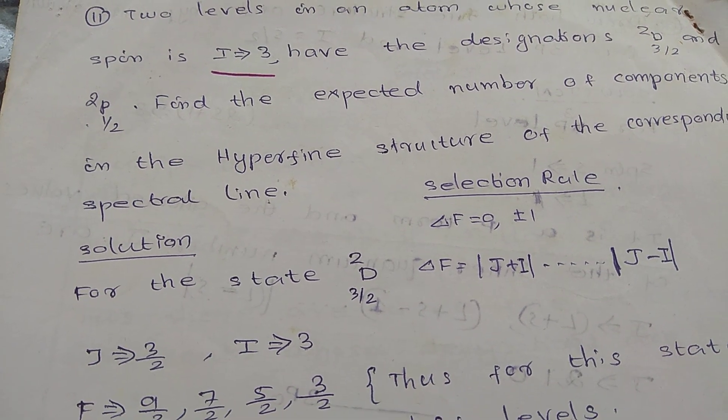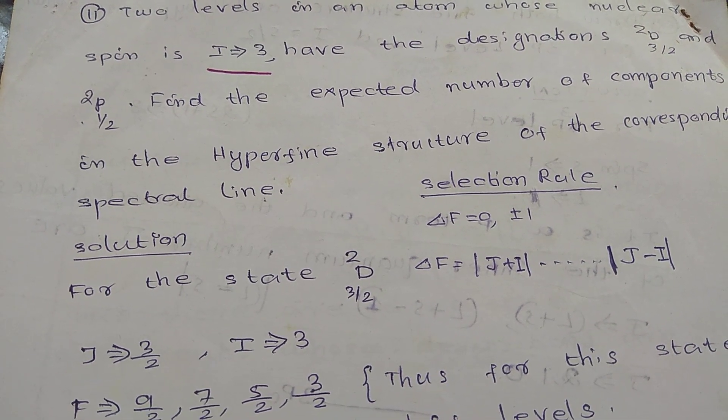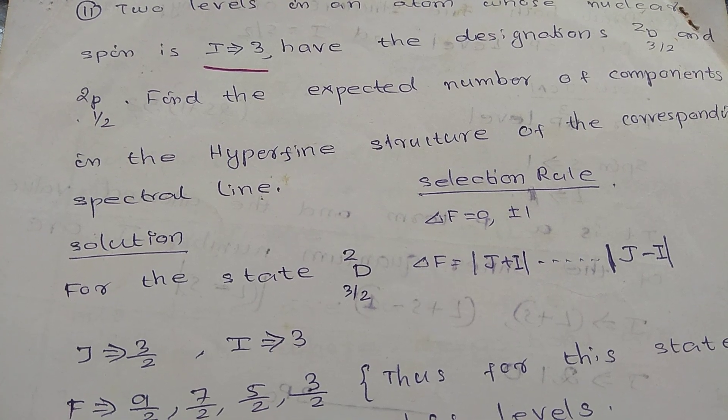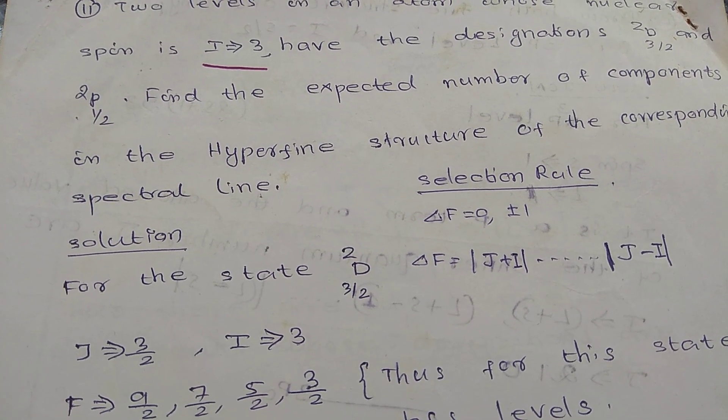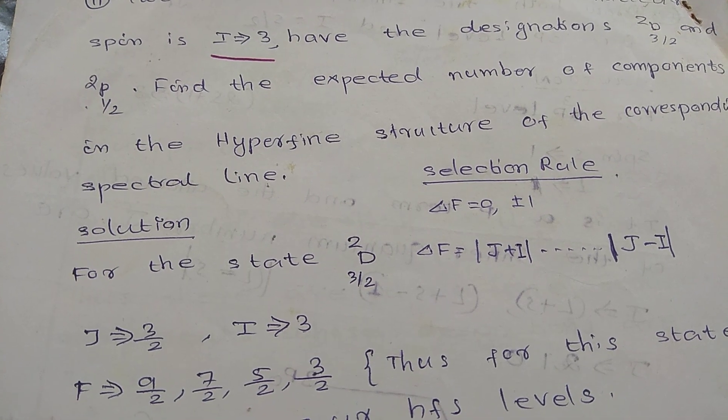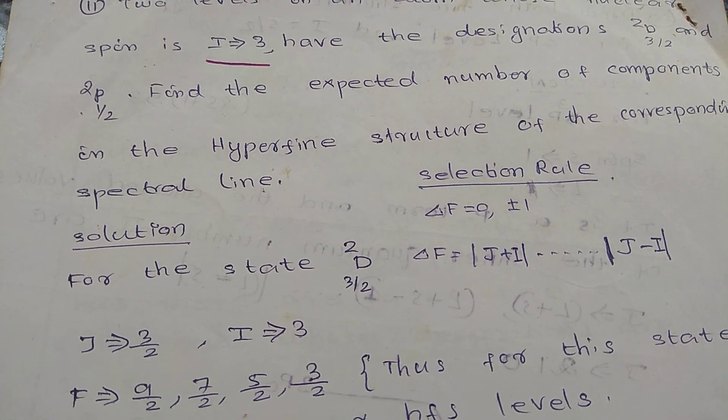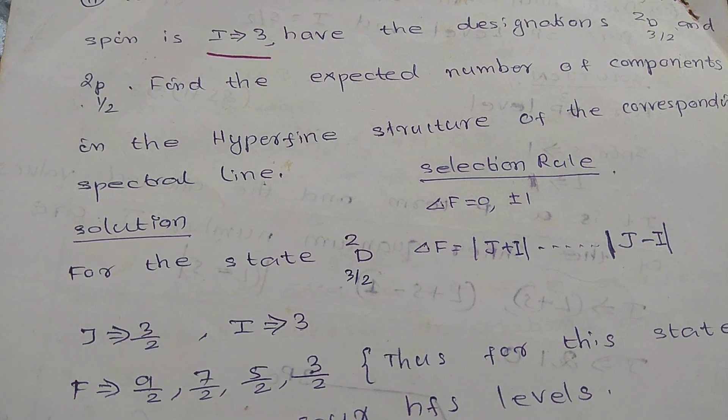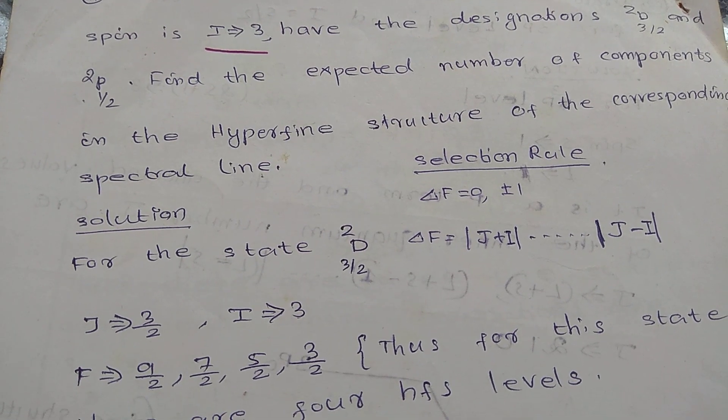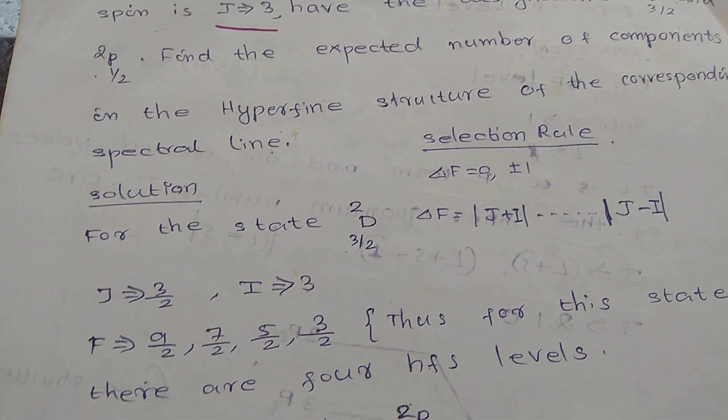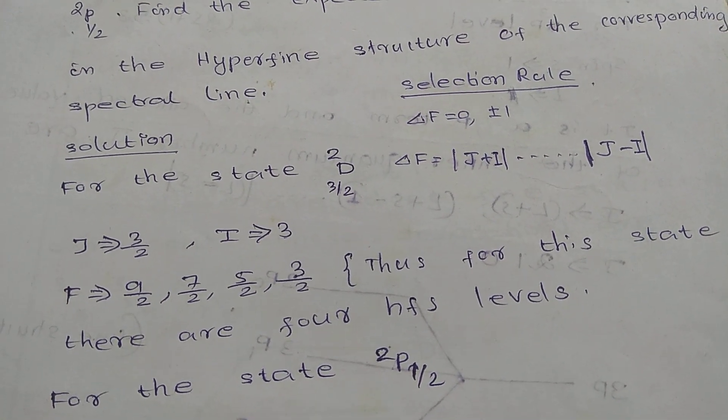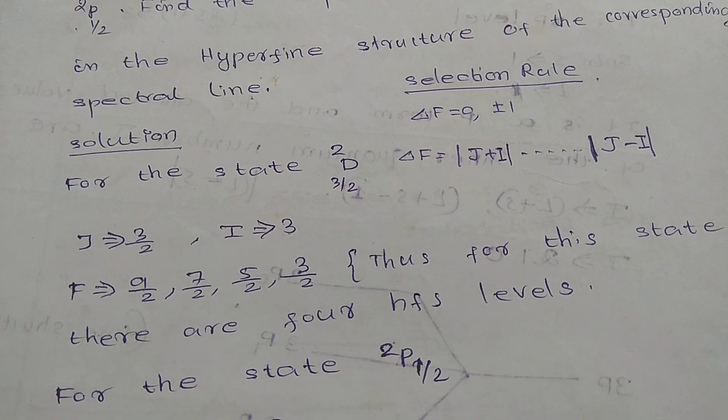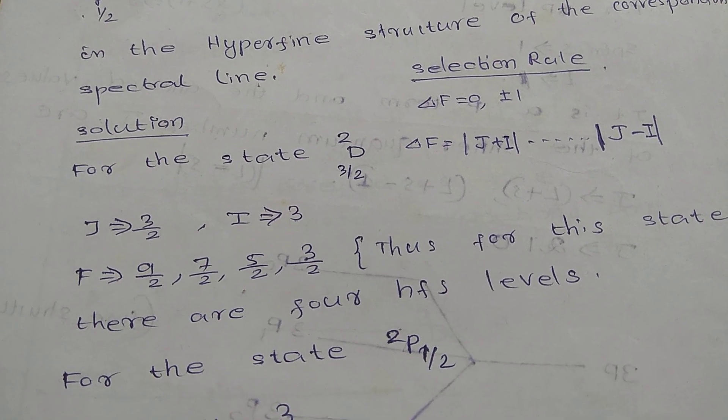For the state D₂³/₂, ΔF equals |J + I| to |J - I|. Here J equals 3/2, I equals 3. So F equals, according to the selection rule, we get F equals 9/2, 7/2, 5/2, 3/2. Thus for this state there are 4 hyperfine levels.